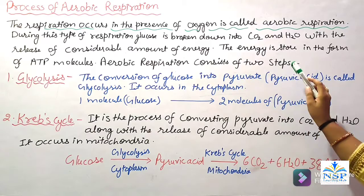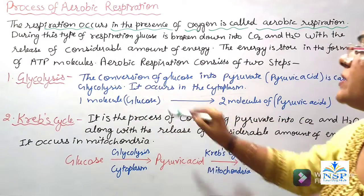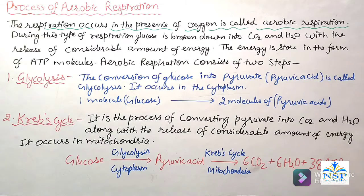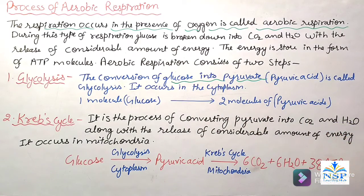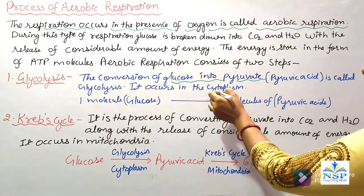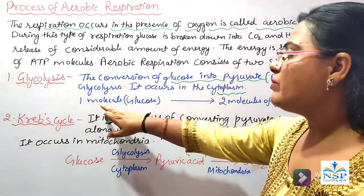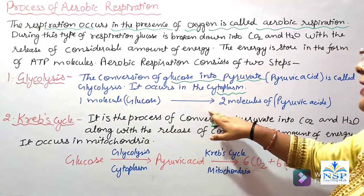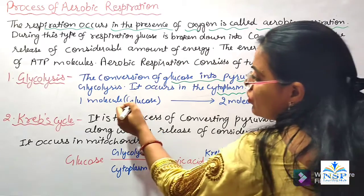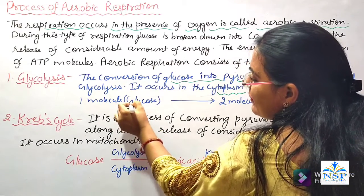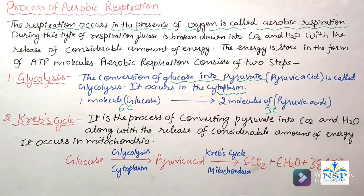Aerobic respiration consists of two steps. Number one: glycolysis. The conversion of glucose into pyruvate is called glycolysis. It occurs in the cytoplasm of the cell. One molecule of glucose is converted into two molecules of pyruvic acid, because the glucose molecule has 6 carbon atoms and the pyruvic acid is a 3 carbon atom molecule.